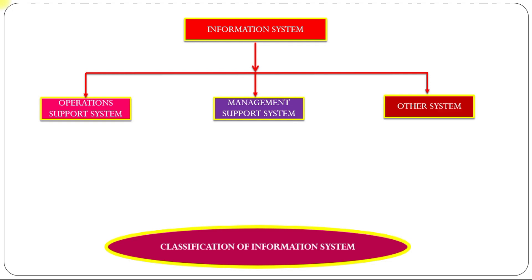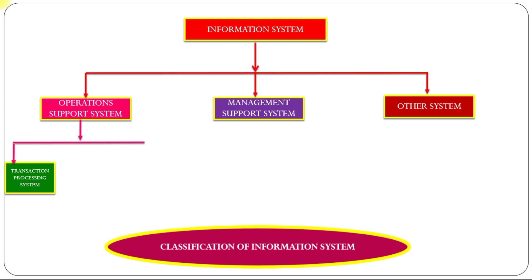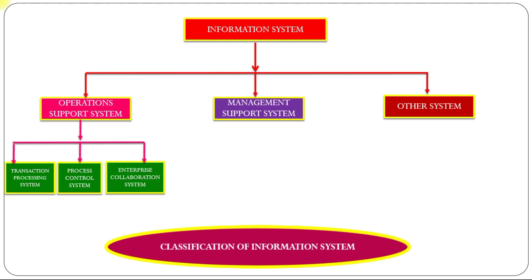Operation support system is further classified into three: transaction processing system, process control system, and enterprise collaboration system — that is, TPS, PCS, and ECS.